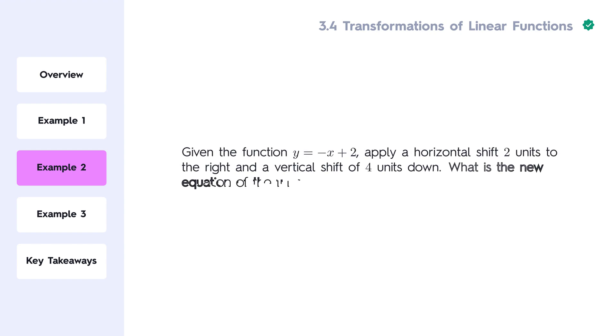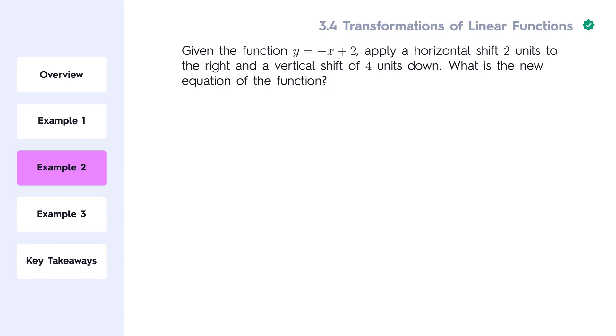Given the function y equals negative x plus 2, apply a horizontal shift 2 units to the right and a vertical shift of 4 units down. What is the new equation of the function?